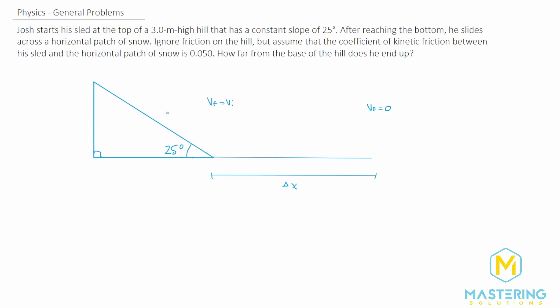And then the final velocity will equal zero because obviously he's going to stop. So how do we do that? The first thing is that we don't know what this distance is right here for the hill. So this delta x.